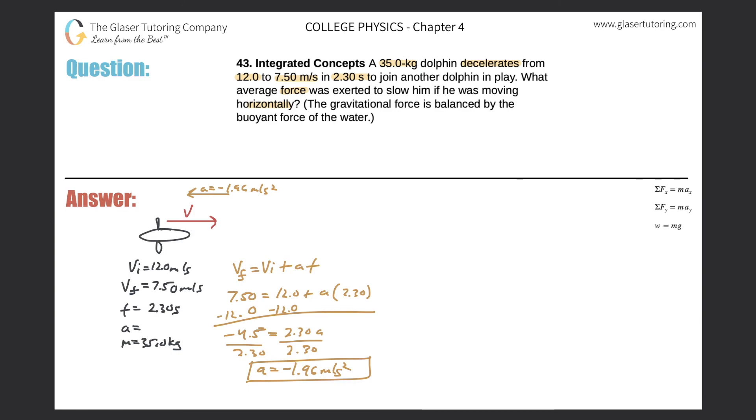Now let's draw a force diagram, a free body diagram. In the middle represents the dolphin. Remember that there is an acceleration to the left. So that acceleration is the same as this, negative 1.96 meters per second squared. If that acceleration is pointing to the left, guess where the net force is pointing?